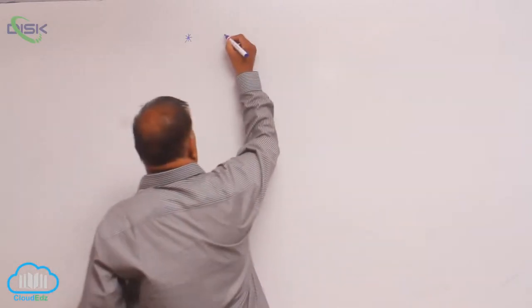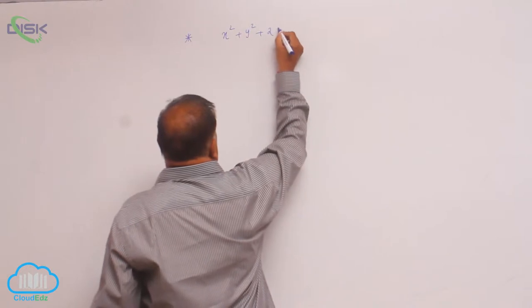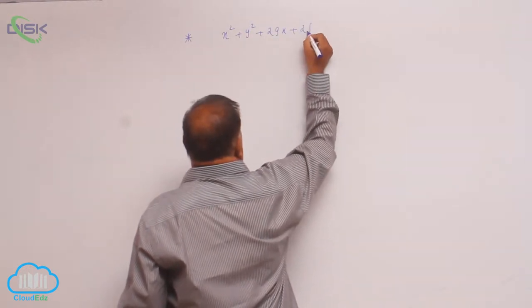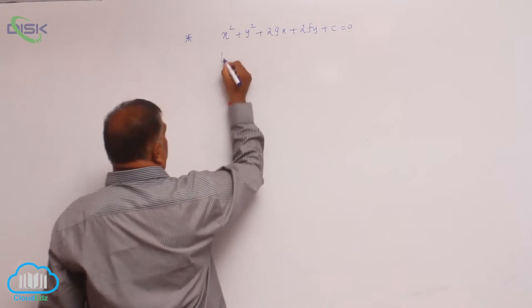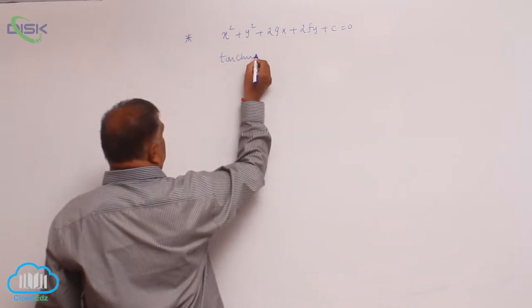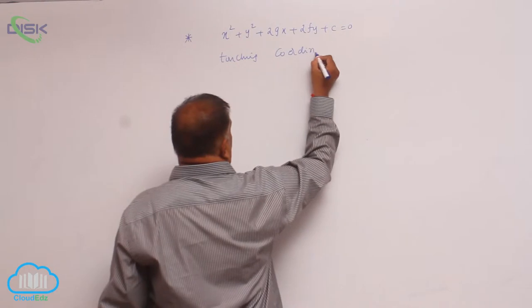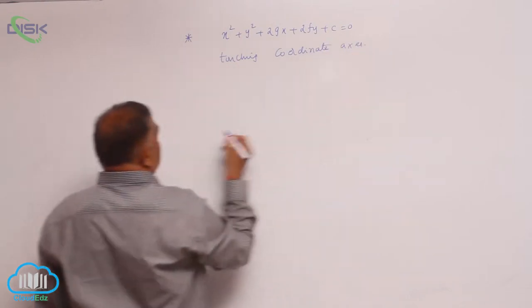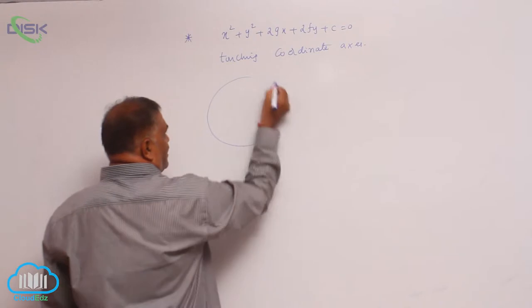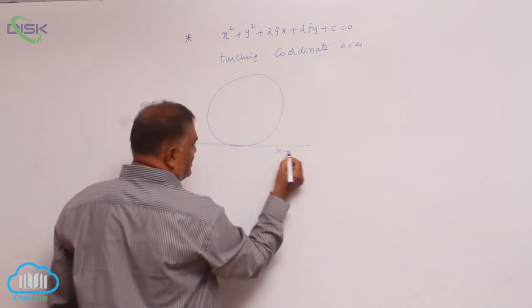We will discuss the circle equation x² + y² + 2gx + 2fy + c = 0 touching the coordinate axis. Let us first see the circle equation touching the x-axis.